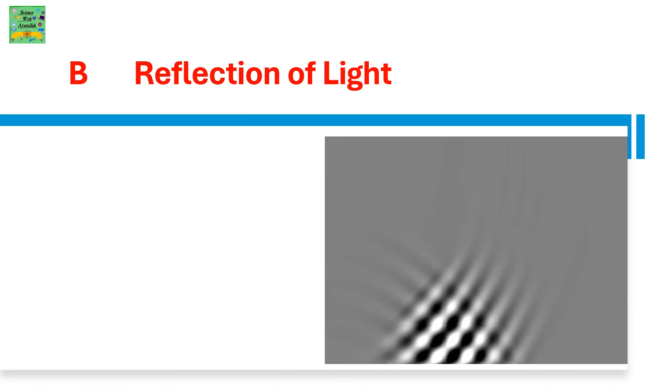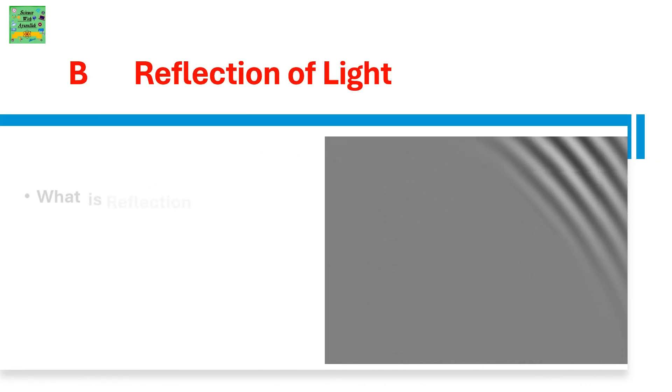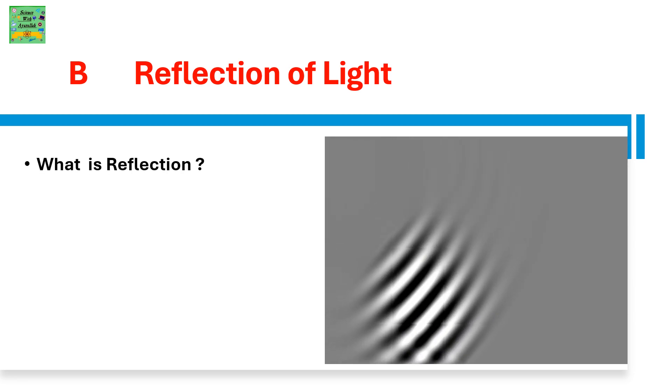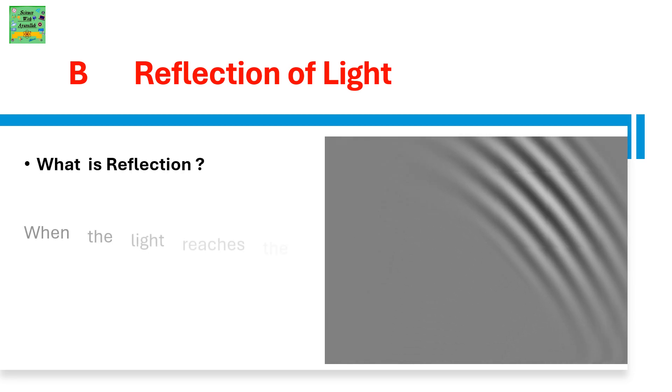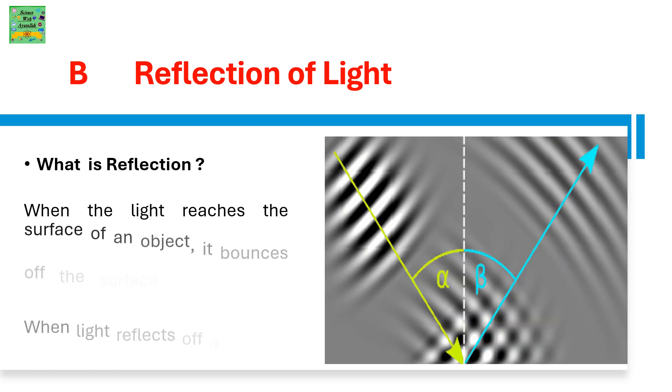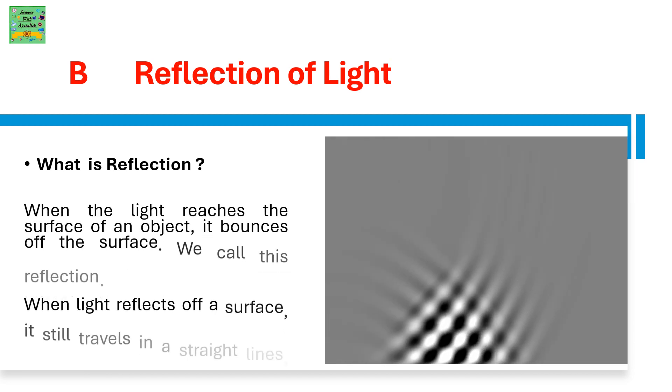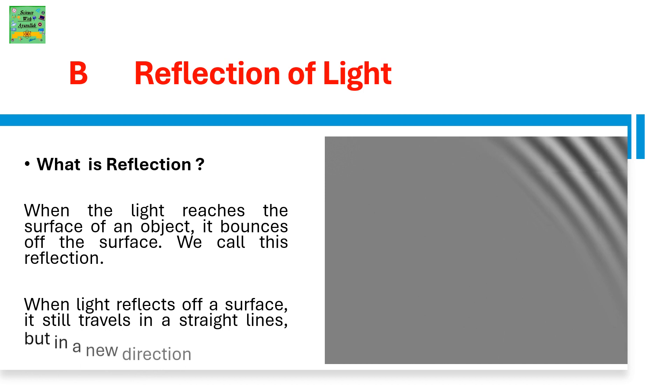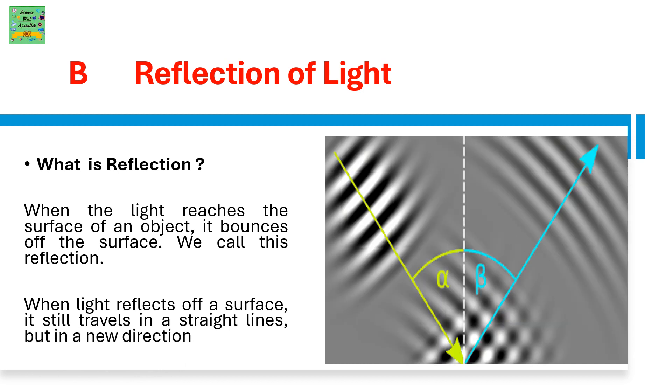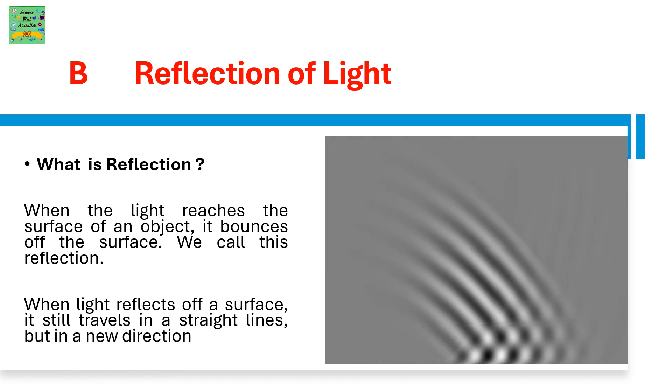Reflection of light. What is reflection? Reflection is when the light reaches the surface of an object. It bounces off the surface. We call this reflection. When light reflects off a surface, it still travels in a straight line, but in a new direction.